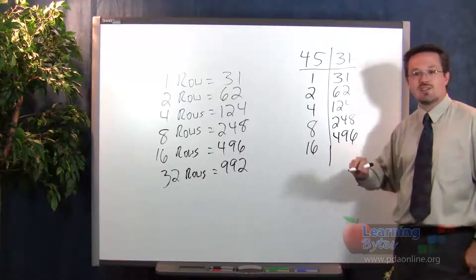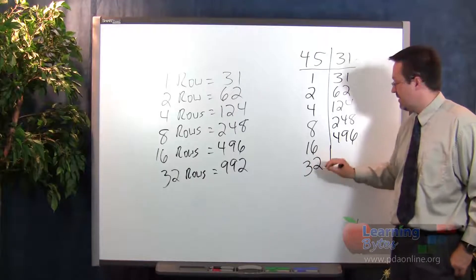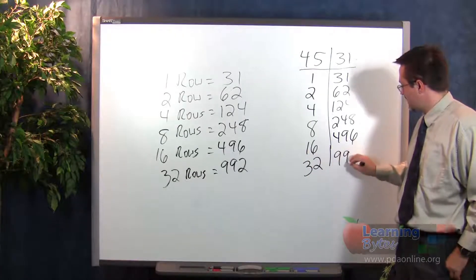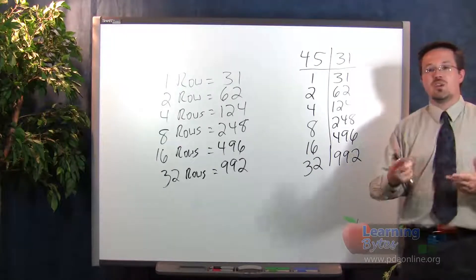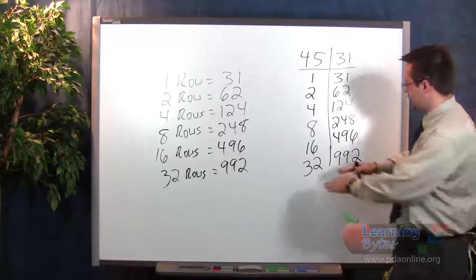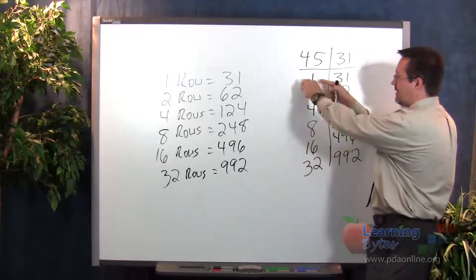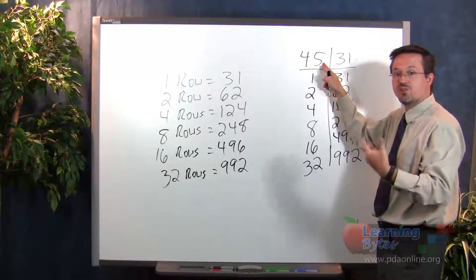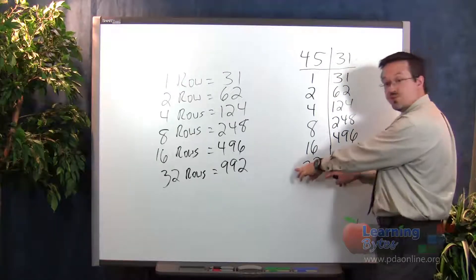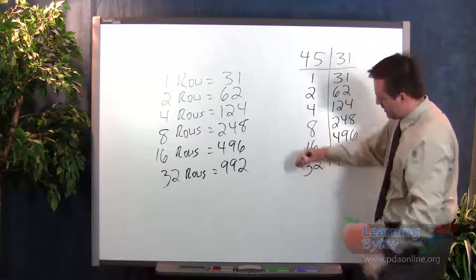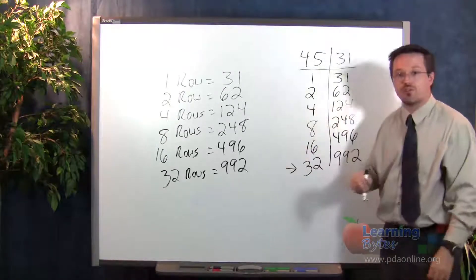And lastly, doubling 16 will give us the 32. And doubling 496 will give us 992. You will then be asking students, and you can point back to the chart that you used earlier, how can I add these numbers up to get the 45 rows that I was looking for? Well, you'll start at the bottom, and you can pull 32 rows out of 45. So we're going to mark the 32.